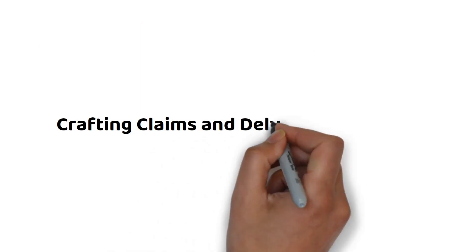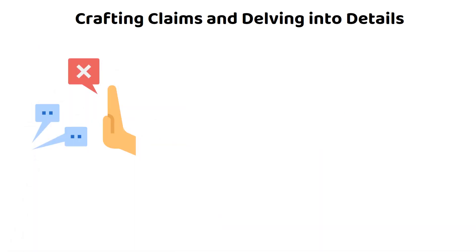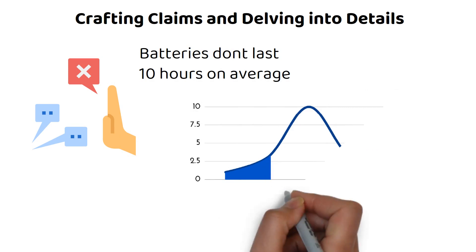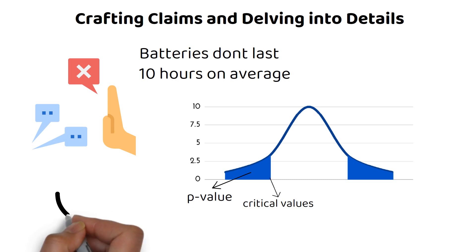Crafting claims and delving into details: Post-analysis, you'd craft a claim about the test, such as based on our sample, there's sufficient evidence to reject the producer's claim that the batteries last 10 hours on average. For Z-tests, the p-values and critical values come from the standard normal distribution. By comparing your calculated Z-score to critical values, or by finding the probability associated with your Z-score, your p-value, you can determine whether to reject the null hypothesis.